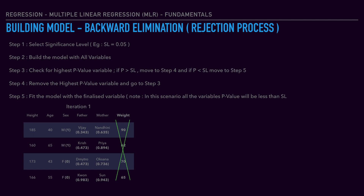Step one: choose the significance level. We choose 0.05. Step two: build the model with all variables. We have 5 independent variables, so we run the linear regression model with all of them as input. Step three: check for the highest p-value variable. Looking at the output, each independent variable has a p-value. The father variable has 0.78 and the mother variable has 0.847.